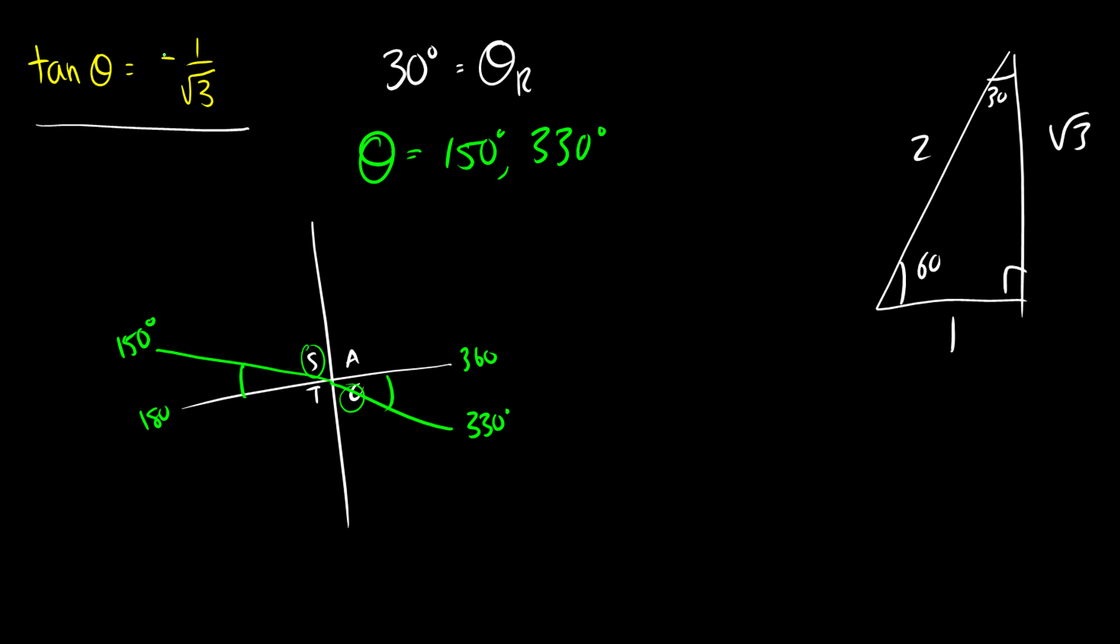If this were positive 1 over root 3 we would look in quadrant 1 and quadrant 3 for our answer because that is where tangent is positive.